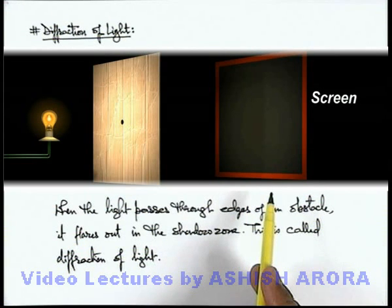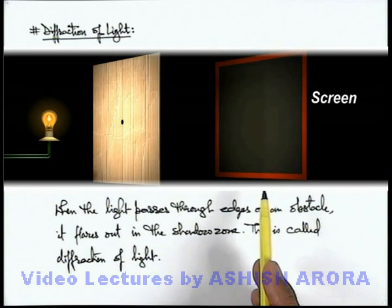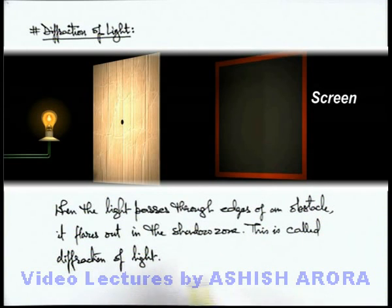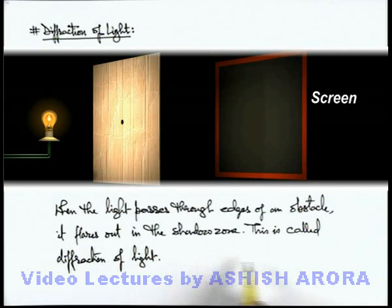This is the phenomenon we call diffraction. When the hole is small, we say diffraction of light dominates rectilinear propagation, and when it was large, rectilinear propagation of light was dominating the diffraction of light. This is the way we understand diffraction of light. In coming sections we'll study the various mathematical analyses and applications of diffraction.